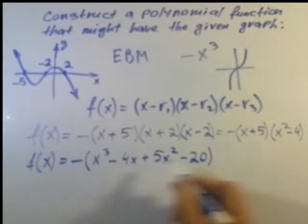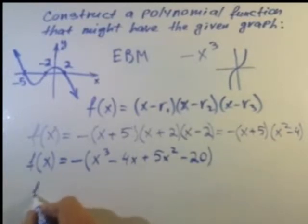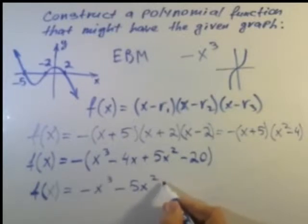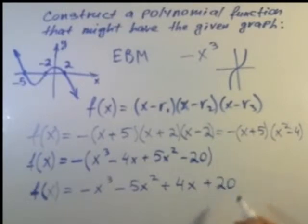We distribute our negative sign and we get negative x cubed minus 5x squared plus 4x plus 20.